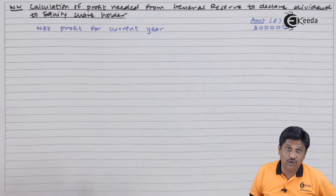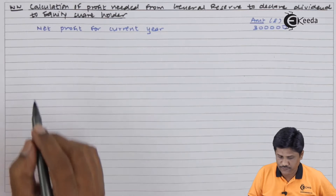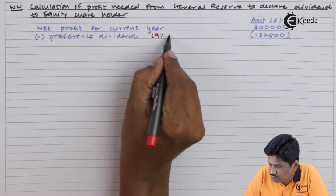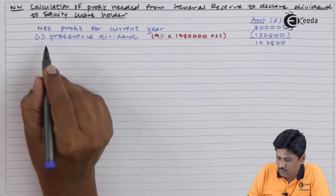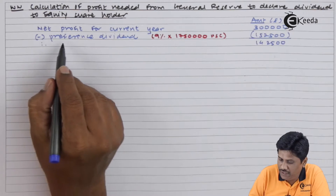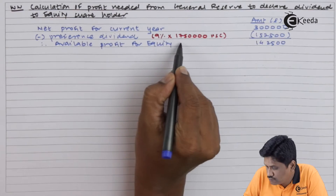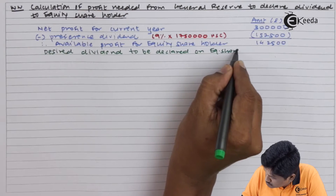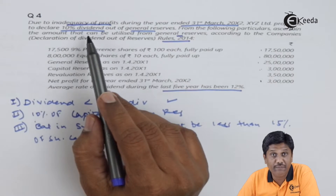Net profit में सबसे पहला अधिकार preference shareholders का होगा. तो इधर से पहले minus करूँगा preference dividend, which is 9% of the preference share capital. 3 लाख के profit में से 1,57,500 preference shareholders के लिए use हो जाएगा. Equity shareholders के लिए available amount अलग रहेगा. Desired dividend to be declared on equity shares: equity capital 80 lakhs का 10% = 8 lakhs.